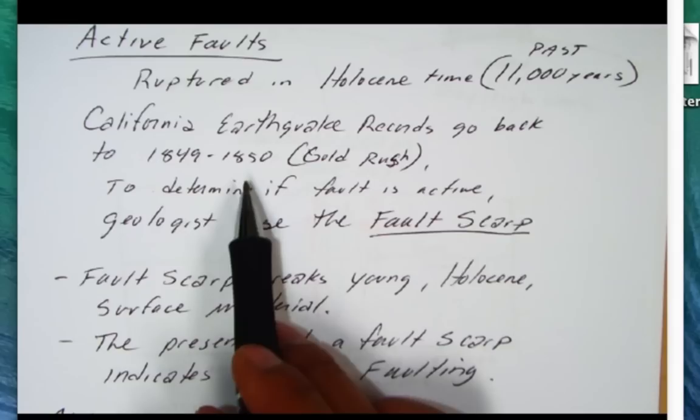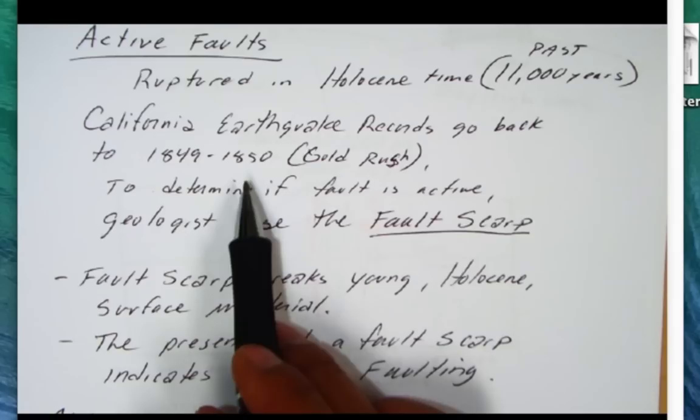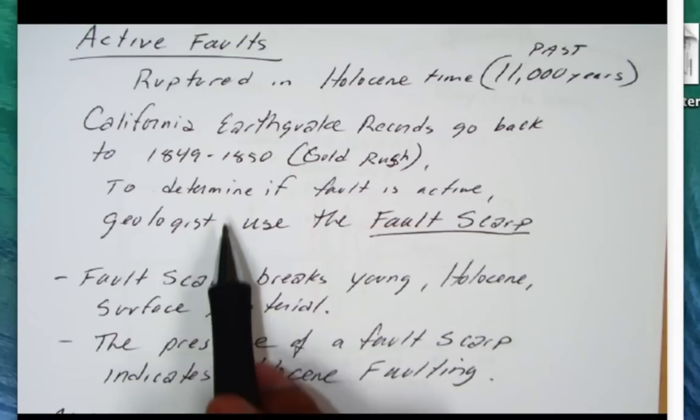We haven't really been in California that long. The gold rush is really popular in the state. We started keeping more records by the 1850s. So to determine if a fault is active,